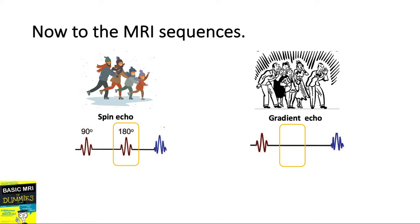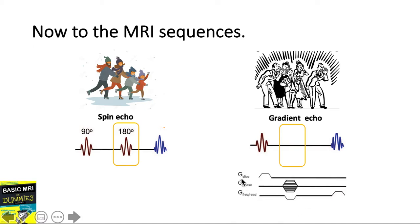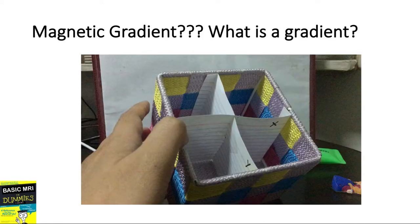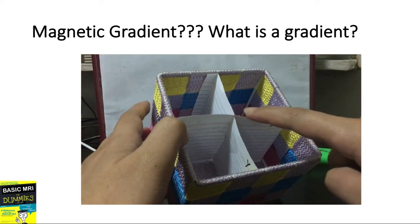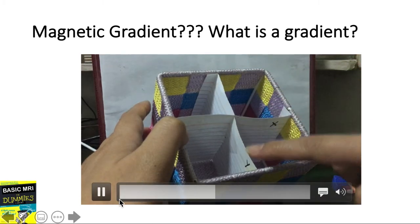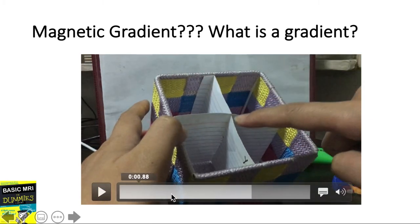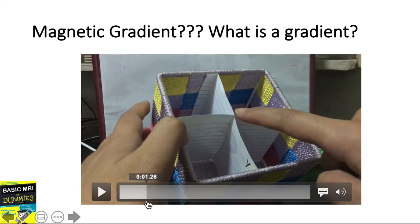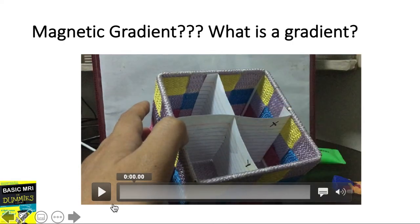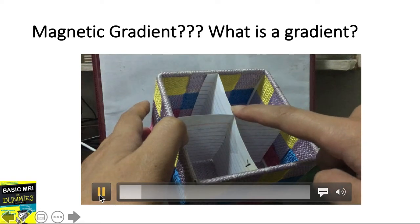So how is an echo made in gradient echo? The echo is produced by a magnetic gradient, represented here by the letter G, which you can see in our MRI diagram. We can think of magnetic gradients as magnetic beams fired in either the x-axis, y-axis, or z-axis.